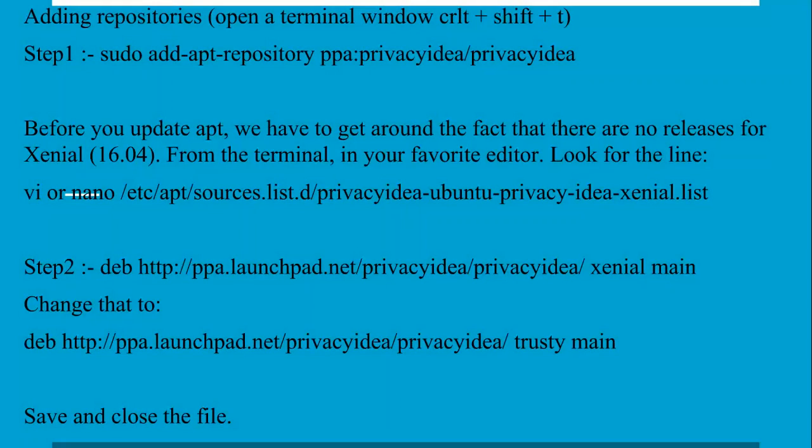Step 1: you need to add the repository. You can copy and paste the command. Then you need to open the configuration file for privacyIDEA. You can use VI, nano, or any editor you prefer. Open the file at /etc/apt/sources.list — you can copy and paste that path.